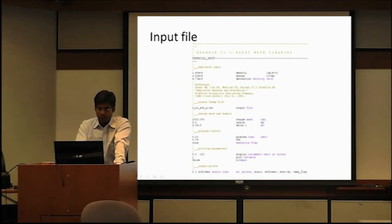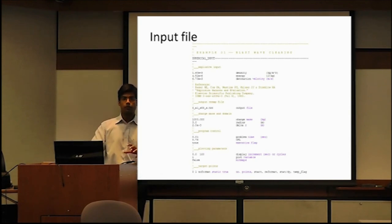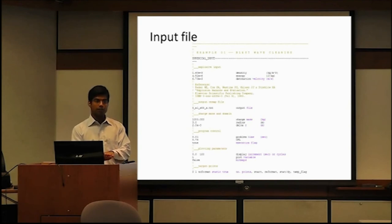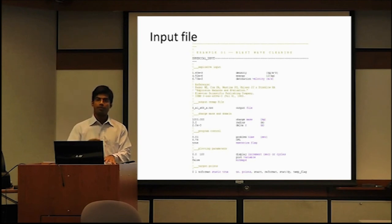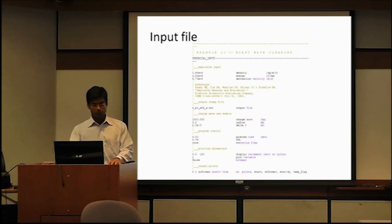For charge mass definition: because your charge mass is on the surface, you have to double your charge weight. We had a 500 kg charge mass. Because it was on the surface and we cannot model the charge below the surface, you double it so that all the response parameters are consistent with the hemispherical charge mass on the surface.